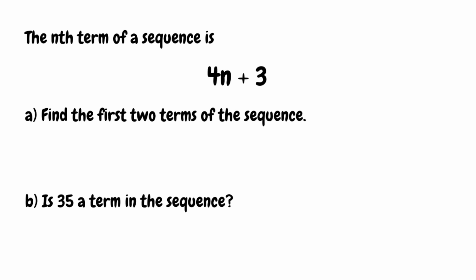We're looking for term number 1 and term number 2. When we've got an expression for the nth term and we want to find a specific term number, all we have to do is substitute that term number in for n. To find that first term, we're going to substitute in n equals 1. So we take 4n plus 3 and substitute n for 1: 4 times 1 plus 3. That gives us 4 plus 3, which is 7. So 7 is our first term in the sequence.